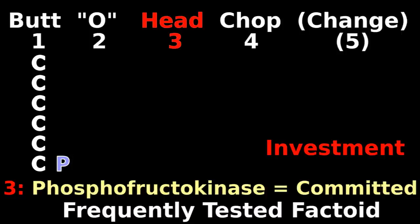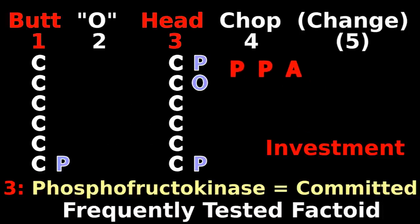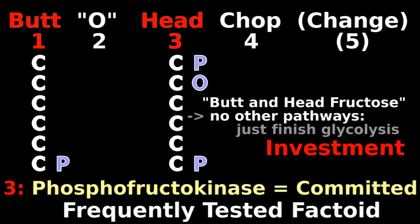If you burn 1 ATP to stick a phosphate on the butt, this butt sugar can go down other pathways. But after investing another ATP and sticking another phosphate on the head, there are no other pathways for butt and head fructose. You have to finish glycolysis.